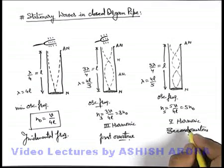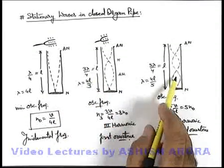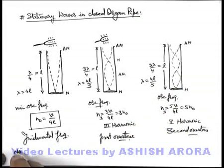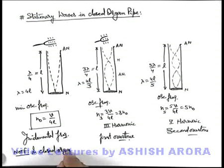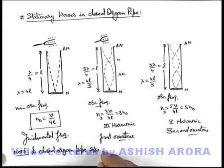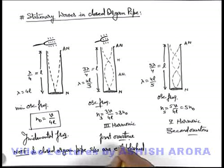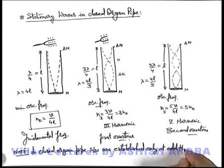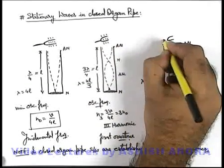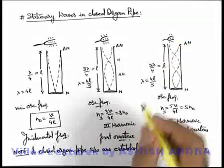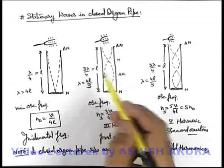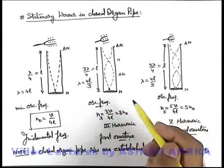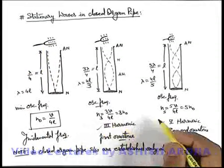So in this situation you can see that in the case of a closed organ pipe, stationary waves can be obtained only at odd harmonic frequencies of the fundamental. This is quite an important relation: in a closed organ pipe, stationary waves are established only at odd harmonics or odd harmonic frequencies. Or we can say when an external tuning fork is brought close to a closed organ pipe, resonance will occur only when the frequency of the tuning fork matches any of the odd harmonic frequencies of the organ pipe.